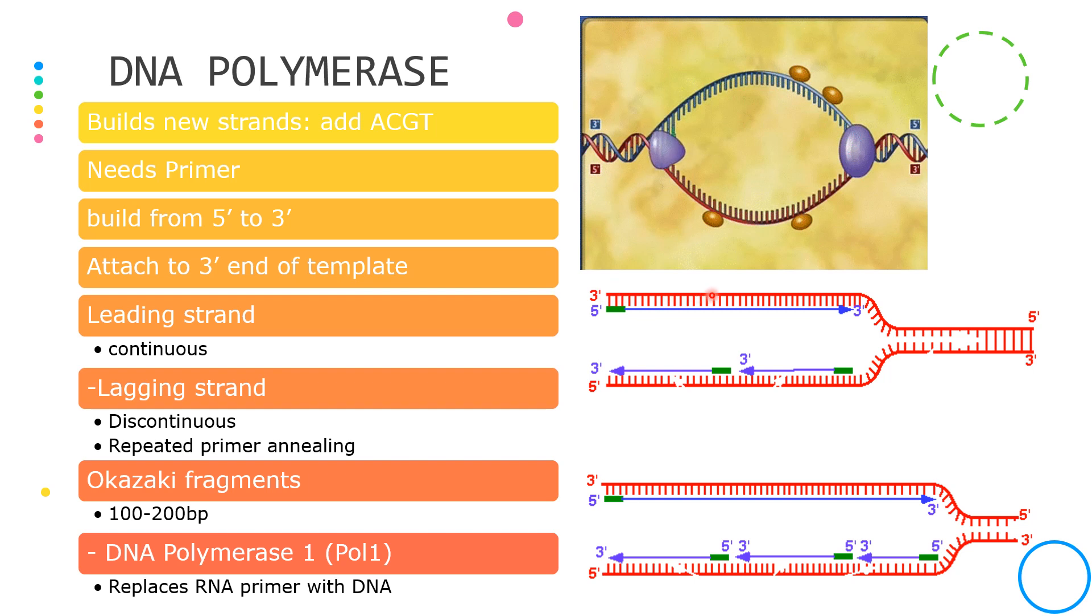Two kinds of strands are formed in this process. We have the leading strand and the lagging strand. The leading strand, which is the 3 prime to the 5 prime DNA template, is known as the continuous process.